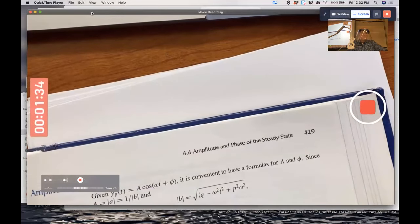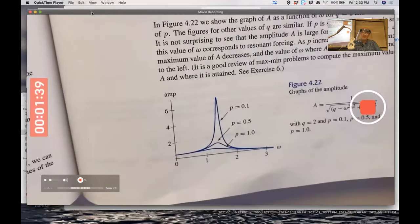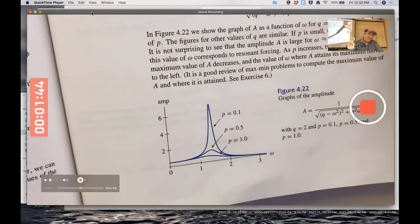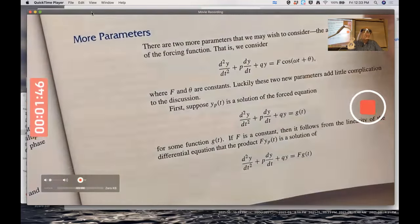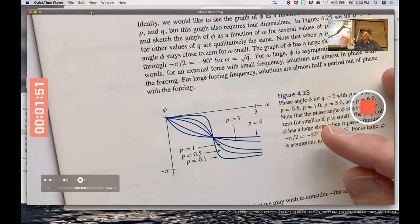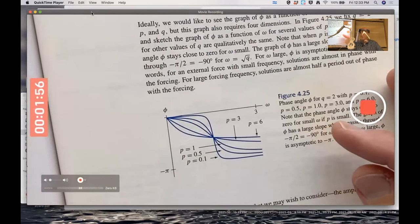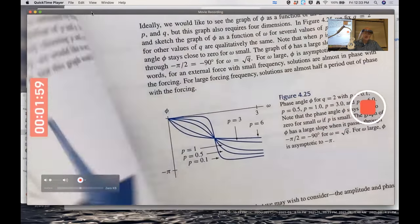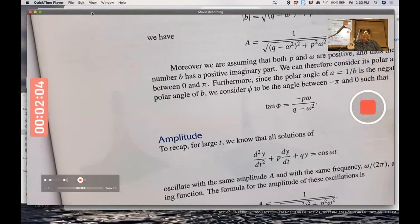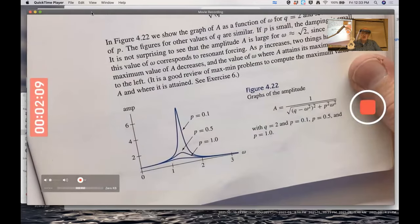My goal for the first part of class today is to try to understand the graphs in section 4.4, this graph on page 429 and this graph two pages later on page 431. That's my goal for the first part of the class. Second part, I want to do a starting example from chapter 5. There is linear algebra content in the lecture, so make sure you watch that to help you with the homework.